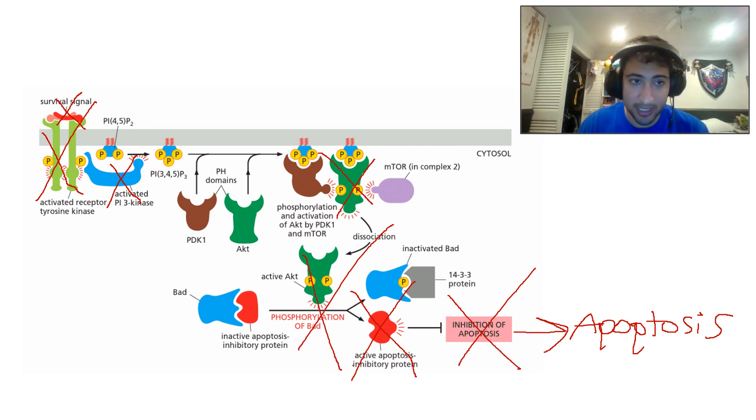This is a pretty important mechanism to understand. Again, the receptor tyrosine kinases lead to AKT phosphorylation, and AKT will phosphorylate BAD to prevent apoptosis.